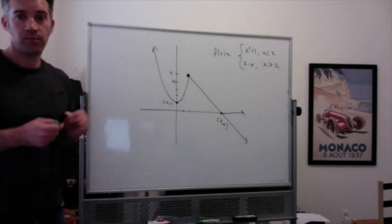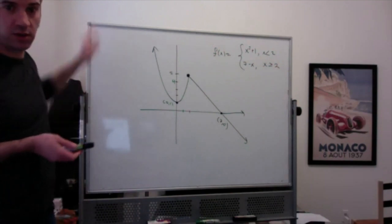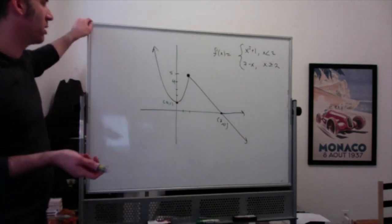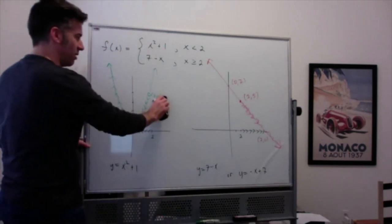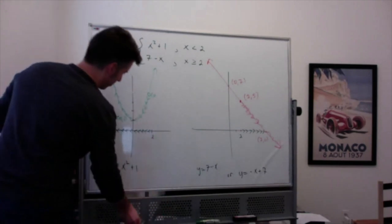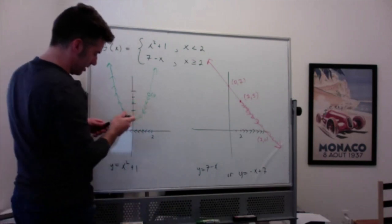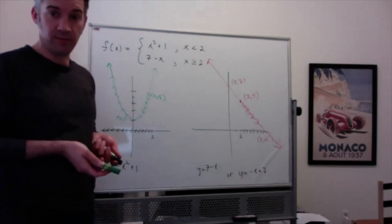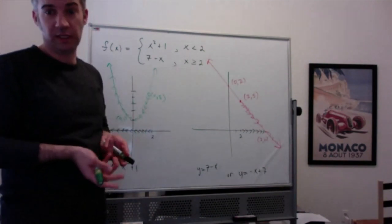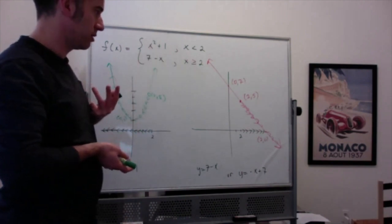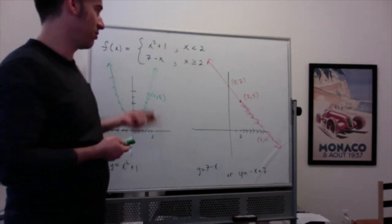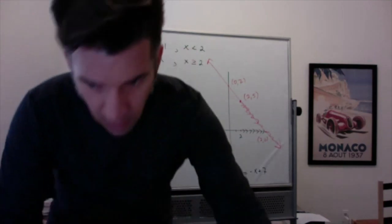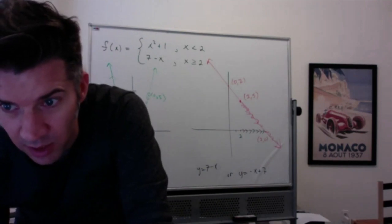So that's the function: x squared plus one when x is less than two, and seven minus x when x is greater than or equal to two. You can certainly graph both or all pieces and then pick the parts you want from each one, but the problem is it's time-consuming. Let's look at another example and talk about a more efficient approach.